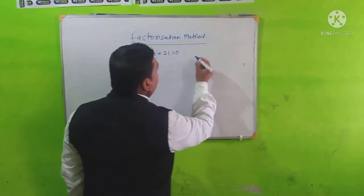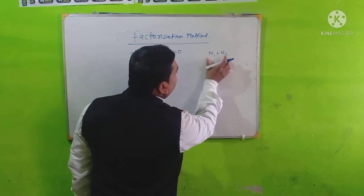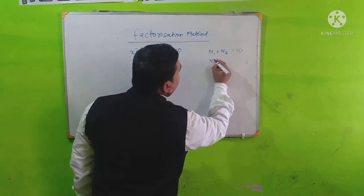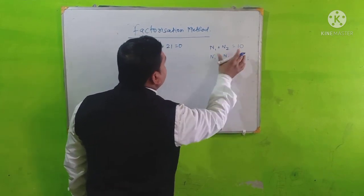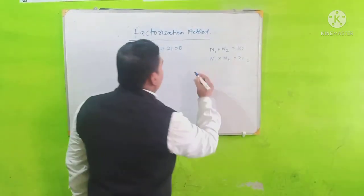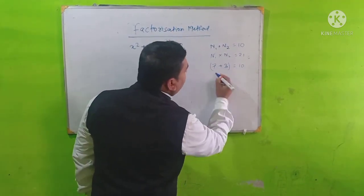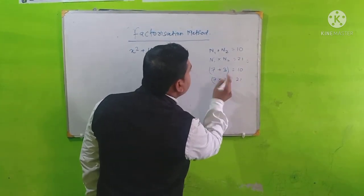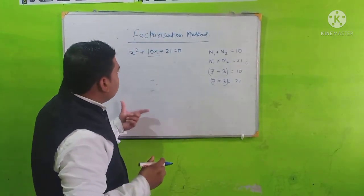How can we split the middle term? It's very easy. We take the middle term as n1 plus n2, where the addition of two numbers equals 10 and the product of two numbers n1 times n2 equals 21. The numbers are 7 and 3, because 7 plus 3 equals 10 and 7 times 3 equals 21. So 7x plus 3x is the expanded form of 10x.